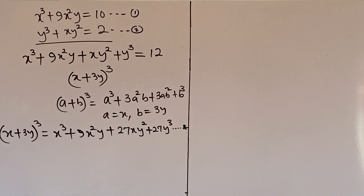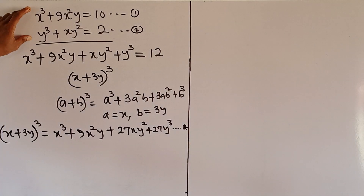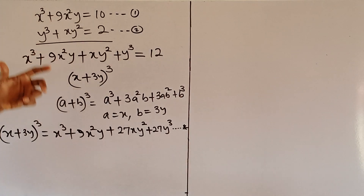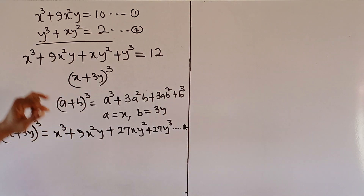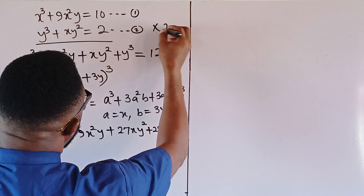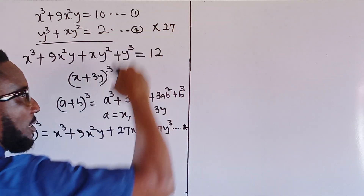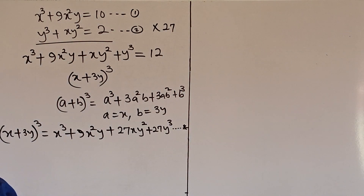Why this problem is tricky is because of its nature — how do we move forward? The only option left is that we should look critically at equations 1 and 2. After brainstorming for a while, I figure that if I multiply equation 2 by 27 and add the answer to equation 1, that would be the killer punch — the eureka moment. And we shall do that.